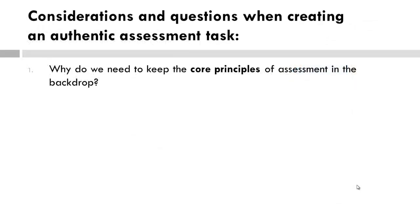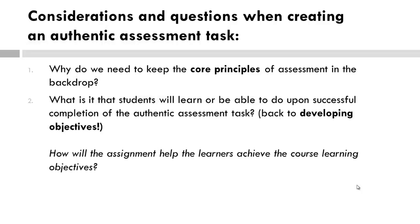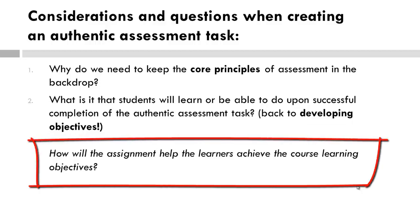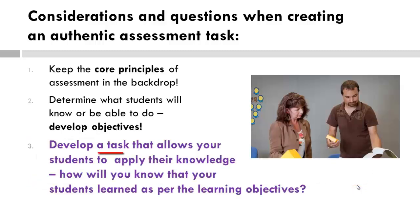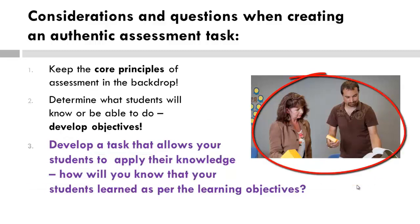Pull out the core principles of assessment and have them handy. Why do we need to consider these principles when creating a rubric? Then determine the learning objectives that the assignment will address. You have course objectives, so start there. How will the assignment help you achieve the course learning objectives? Then you create the task — or better yet, have your students help determine the task.